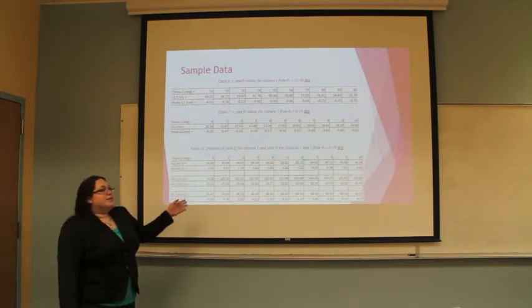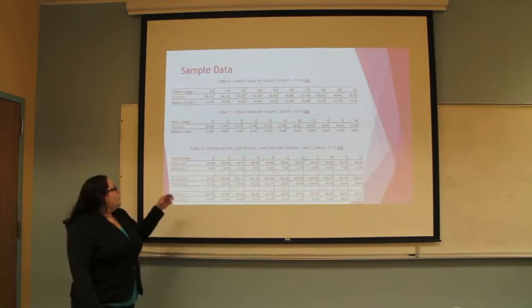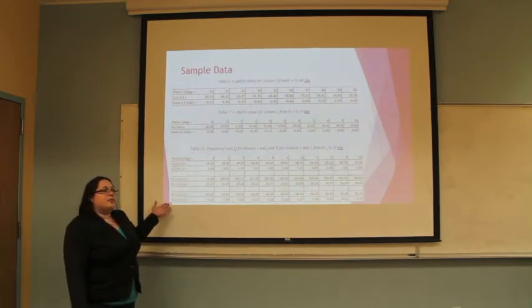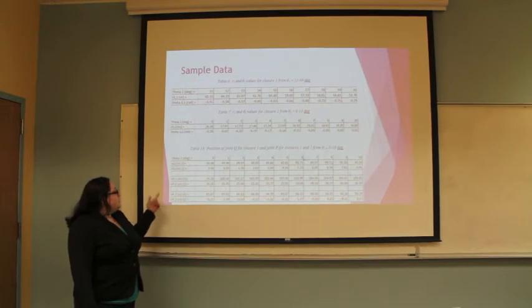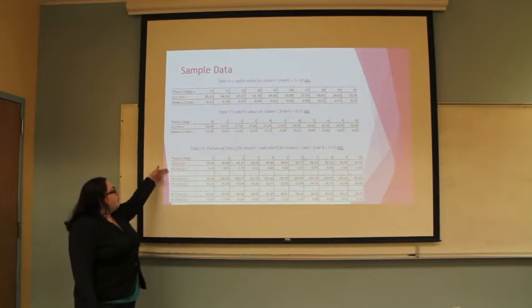In the end we solved for the position of the joints q and p. As can be seen on this bottom table, the two positions for closure 1 and 2 for joint p in the i and j direction, and for joint q in the i and j direction.